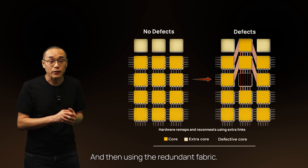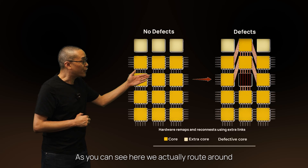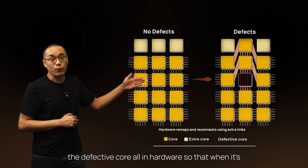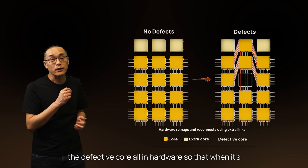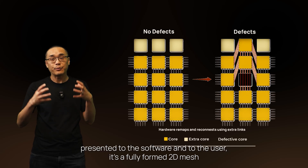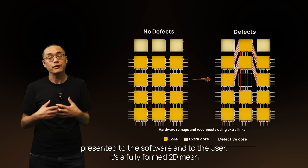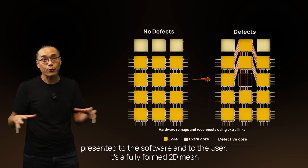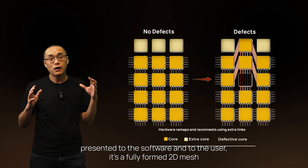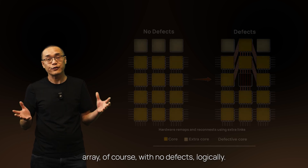Using the redundant fabric, as you can see here, we actually route around the defective core — all in hardware — so that when it's presented to the software and to the user, it's a fully formed 2D mesh array of cores with no defects logically.